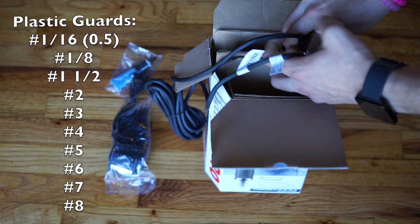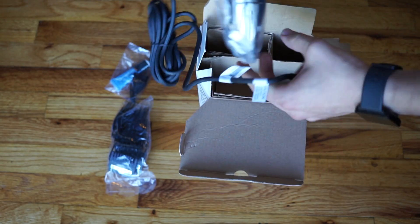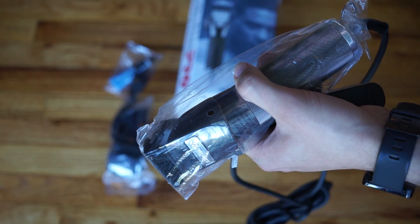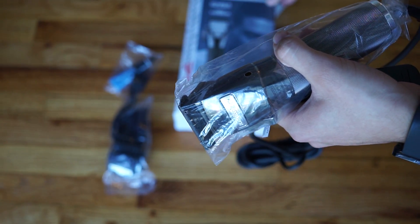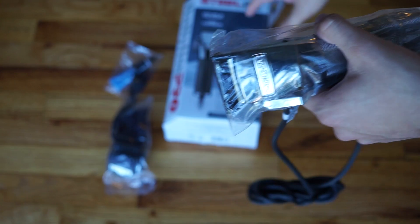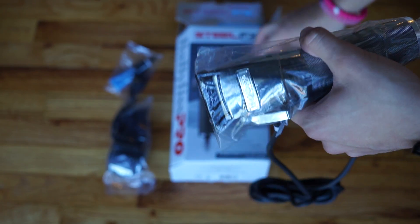Besides the actual clipper and the plastic guards, the other stuff that comes inside the box are the documents and the oil. And you also get the little brush to clean the clipper. Well, that's it. So let's talk about the clipper.